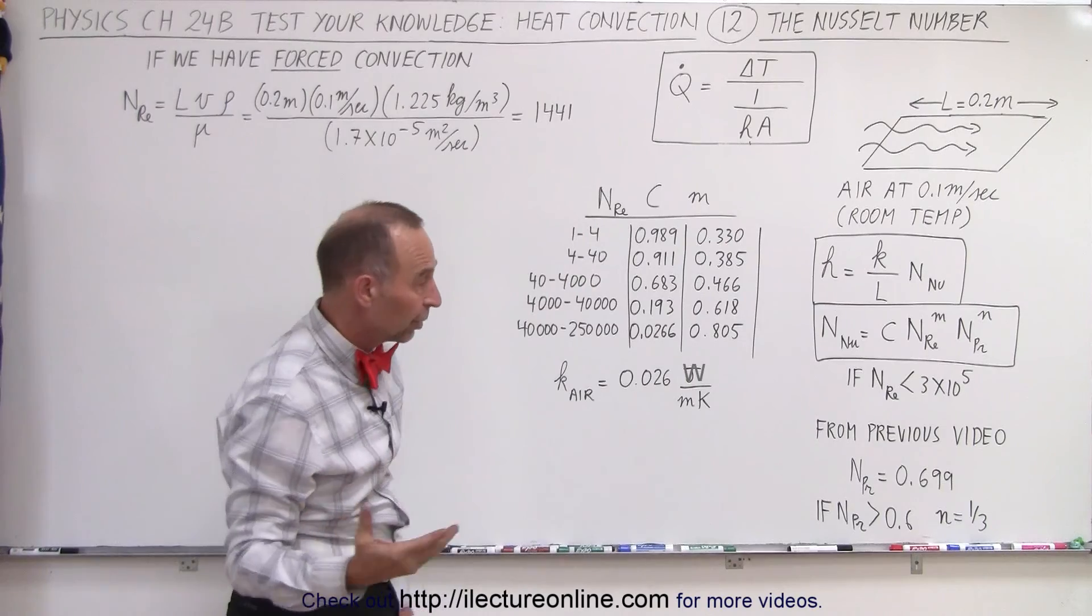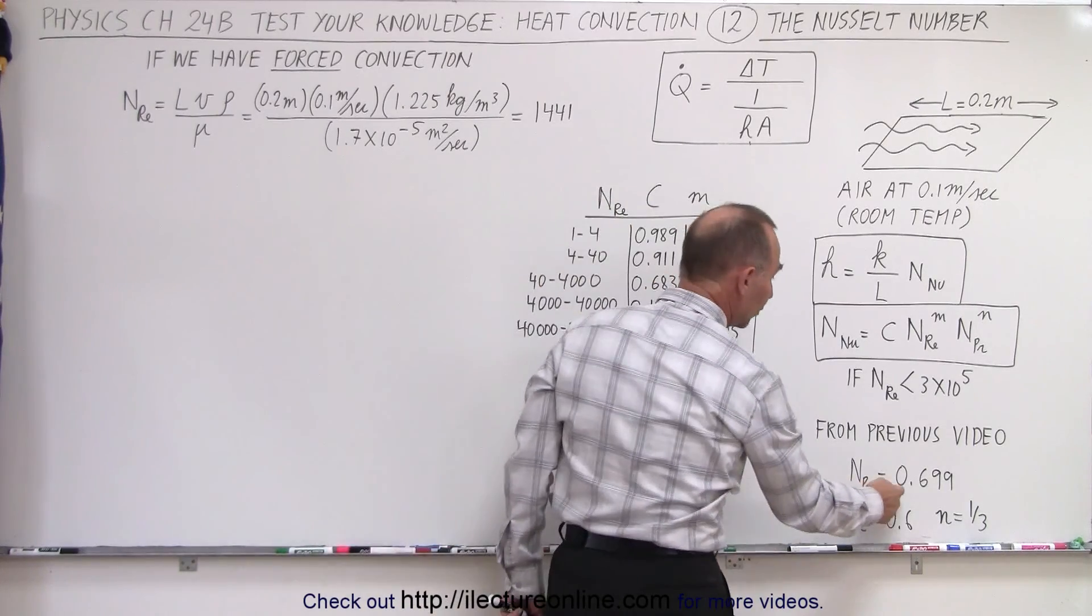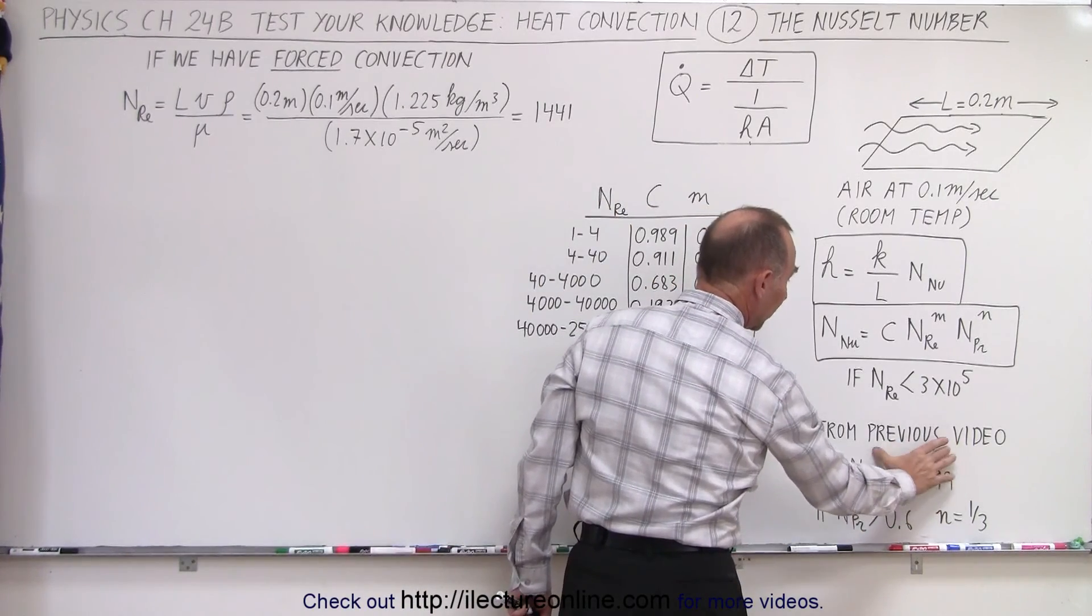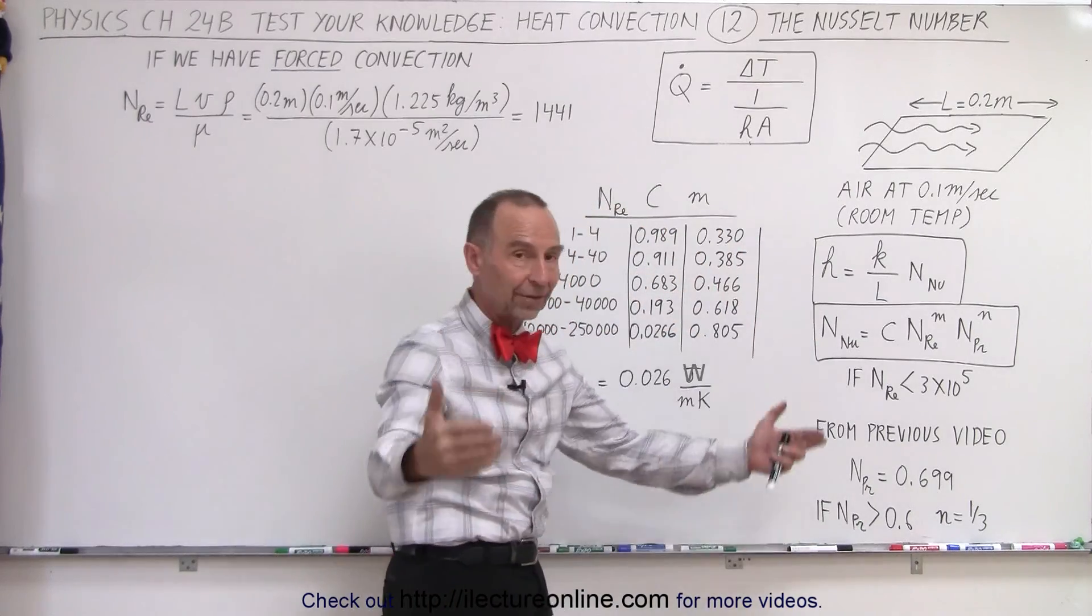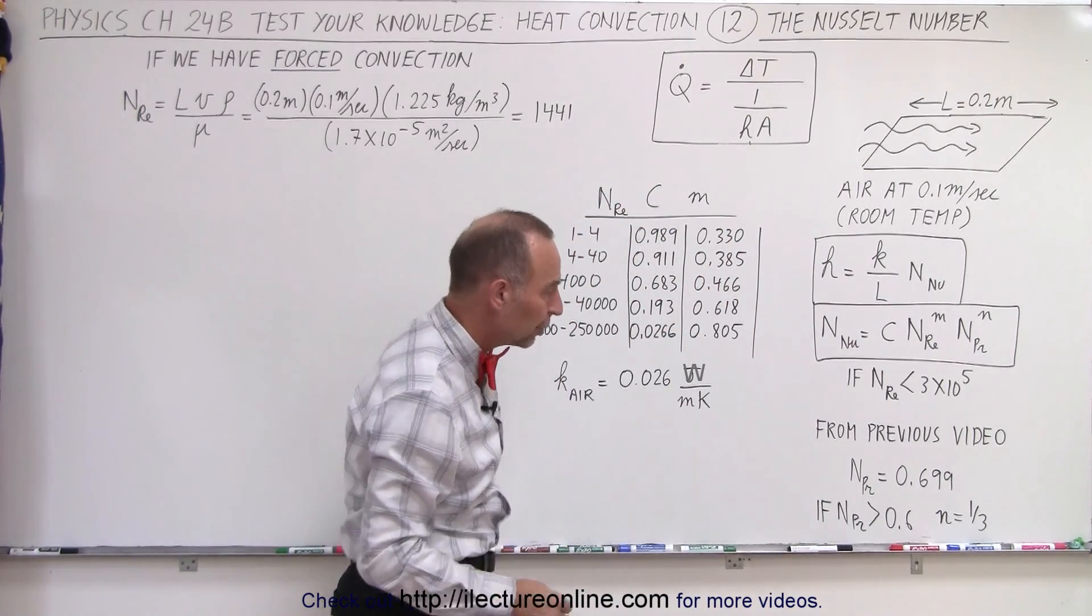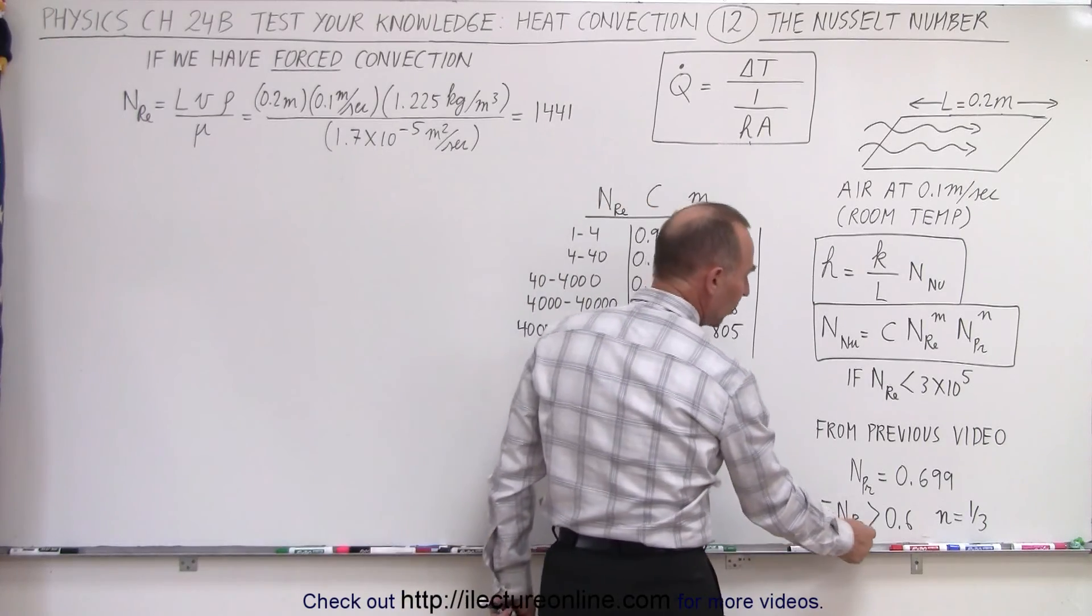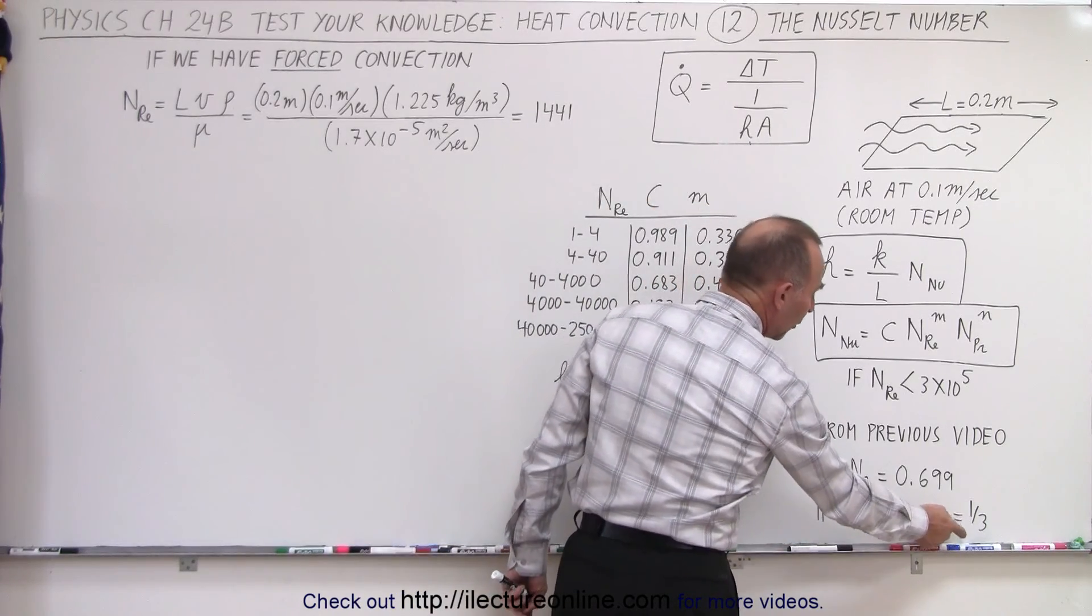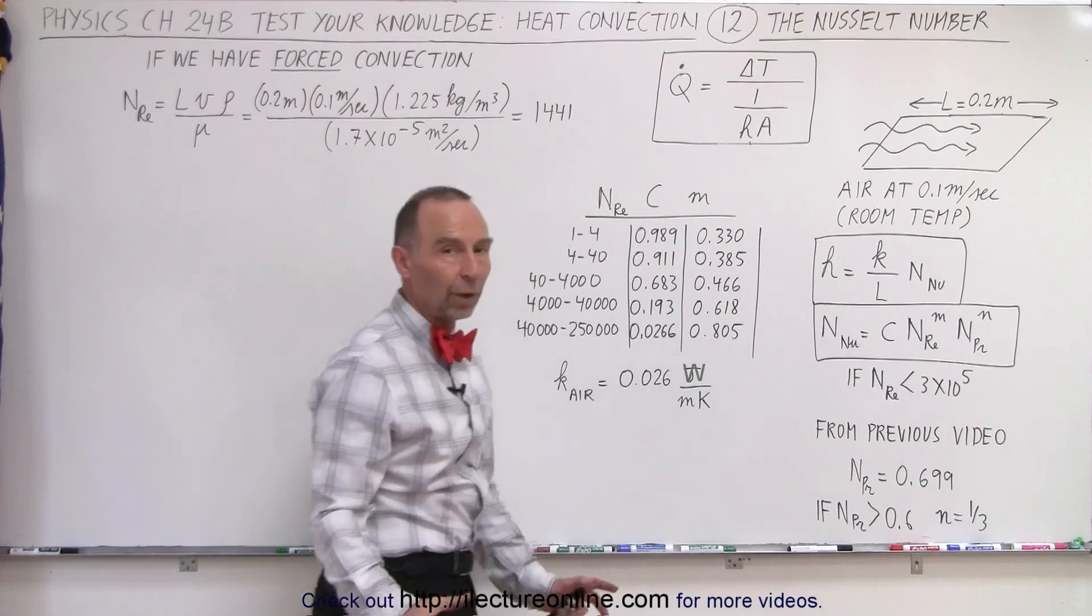Finally we need to know the Prandtl number. The Prandtl number is equal to 0.699. We saw that on the previous video, we had a table. It depends on the temperature of the fluid and the type of fluid that we're using. And if the Prandtl number is greater than 0.6, we can take the exponent of that as being one-third.